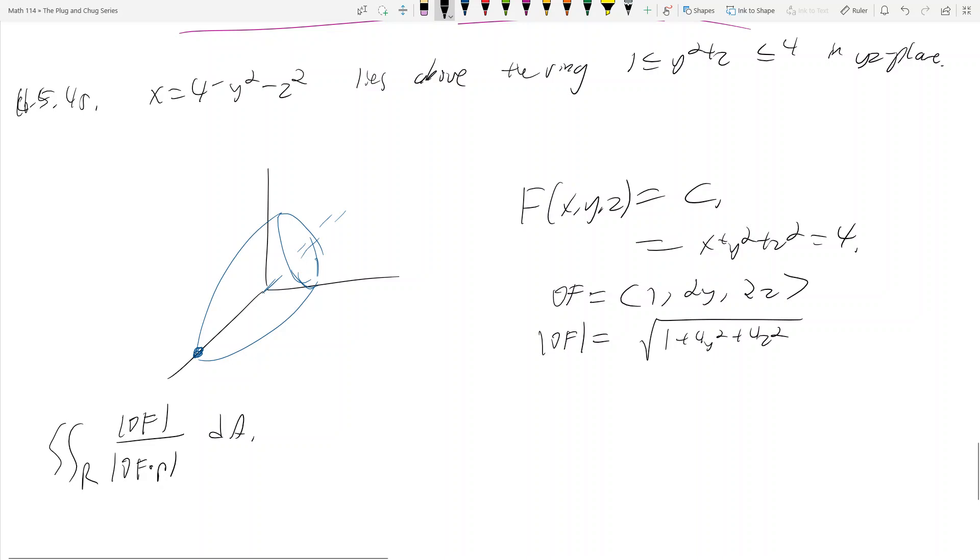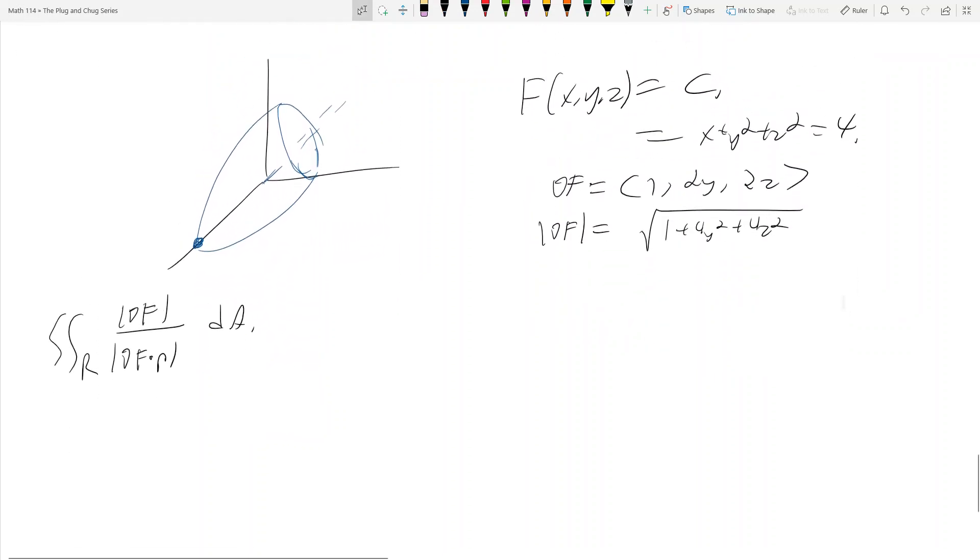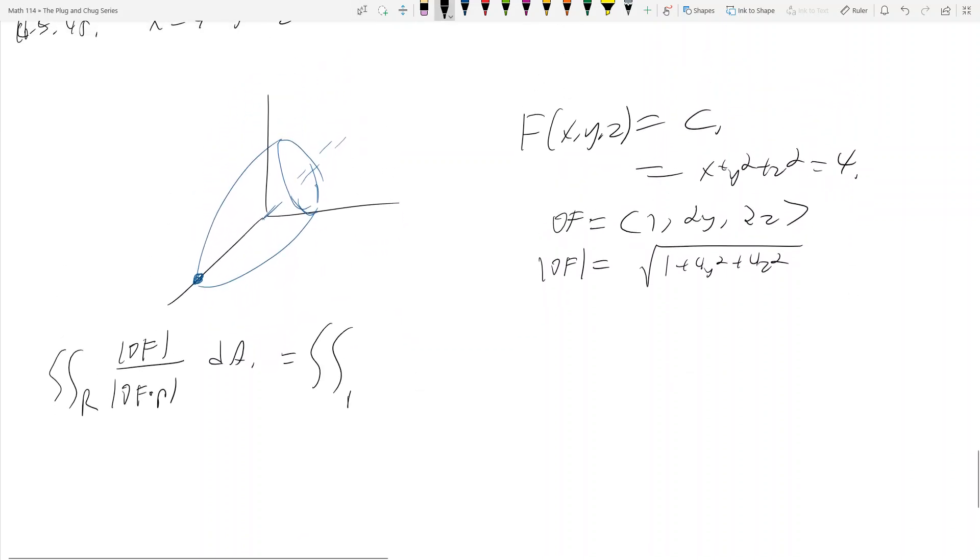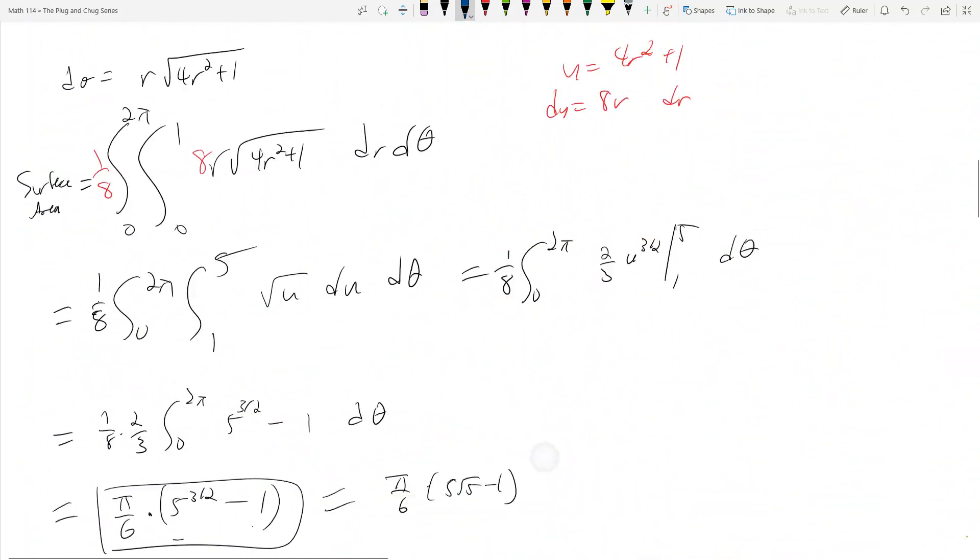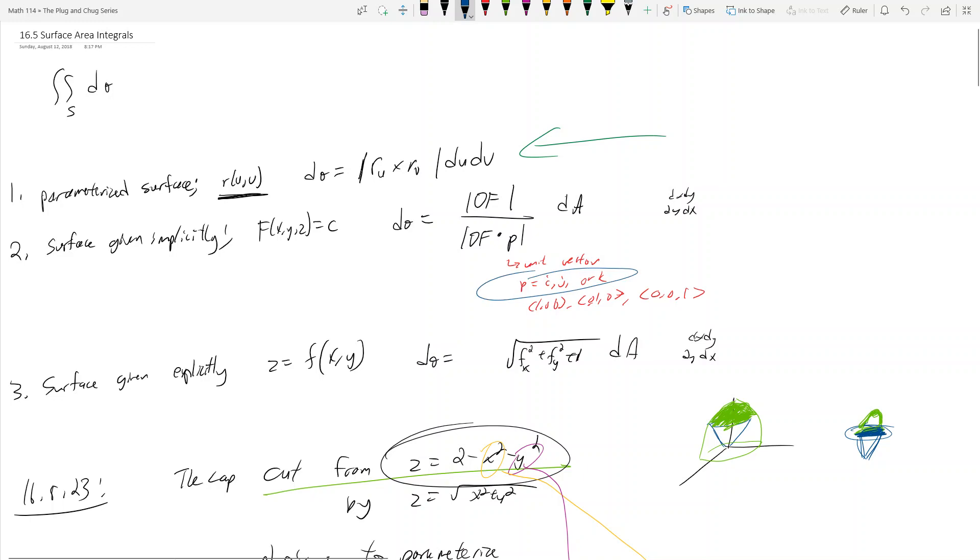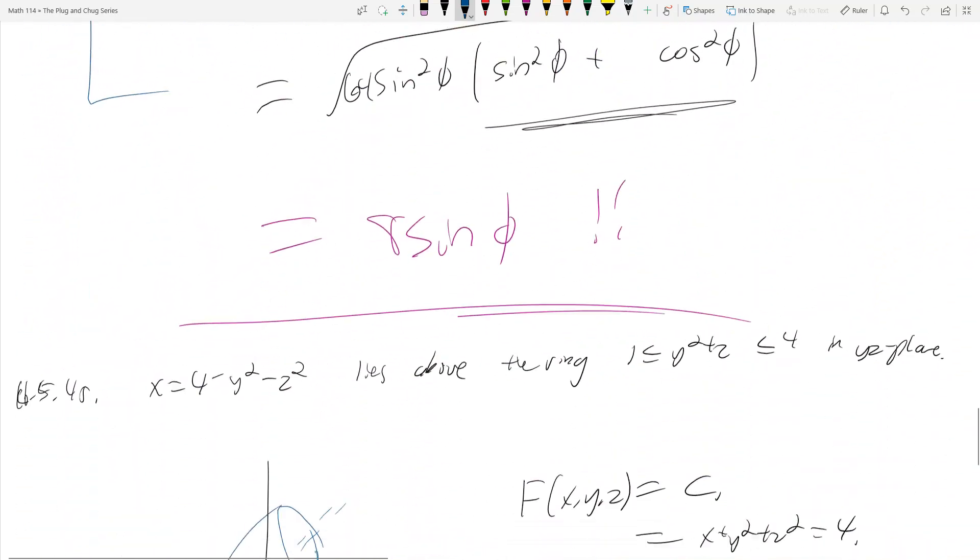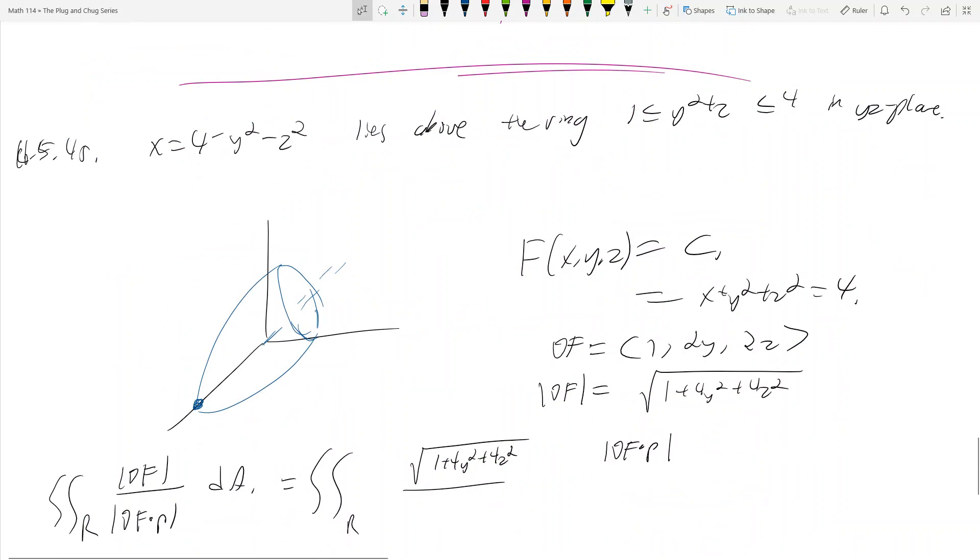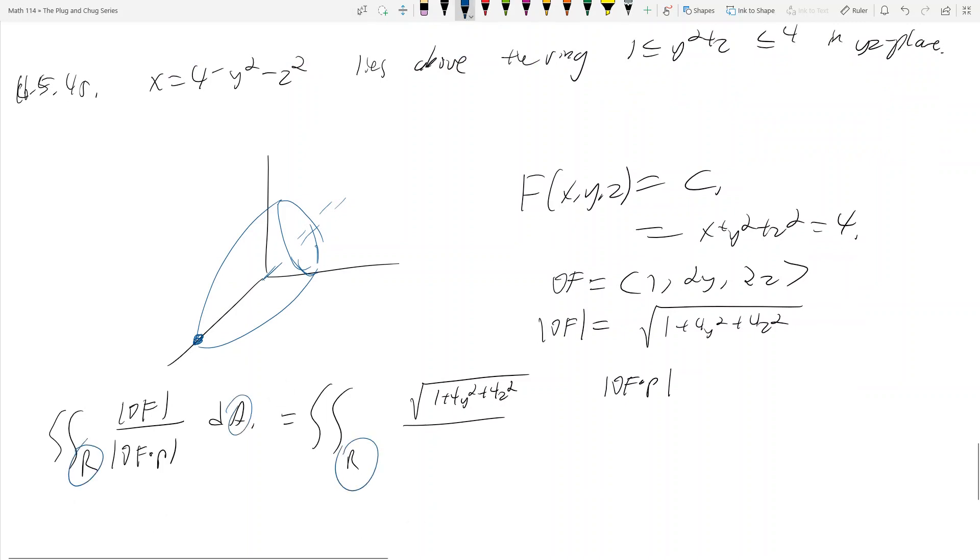Therefore I can take the gradient of f, and that's equal to one, two y, two z. And what's the magnitude of that? Well, the magnitude of f is equal to root one plus four y squared plus four z squared. So down here then, I got the double integral in my region of root one plus four y squared plus four z squared over gradient of f dot p.